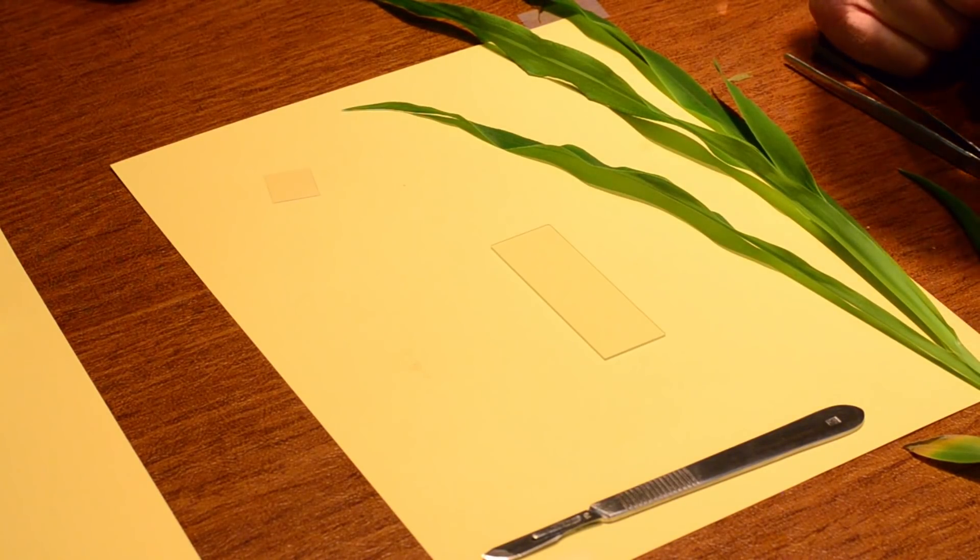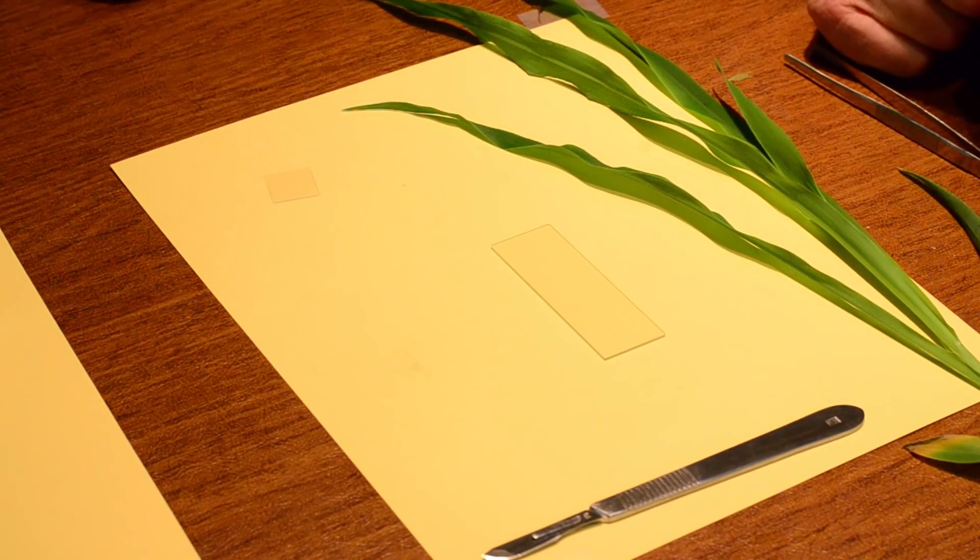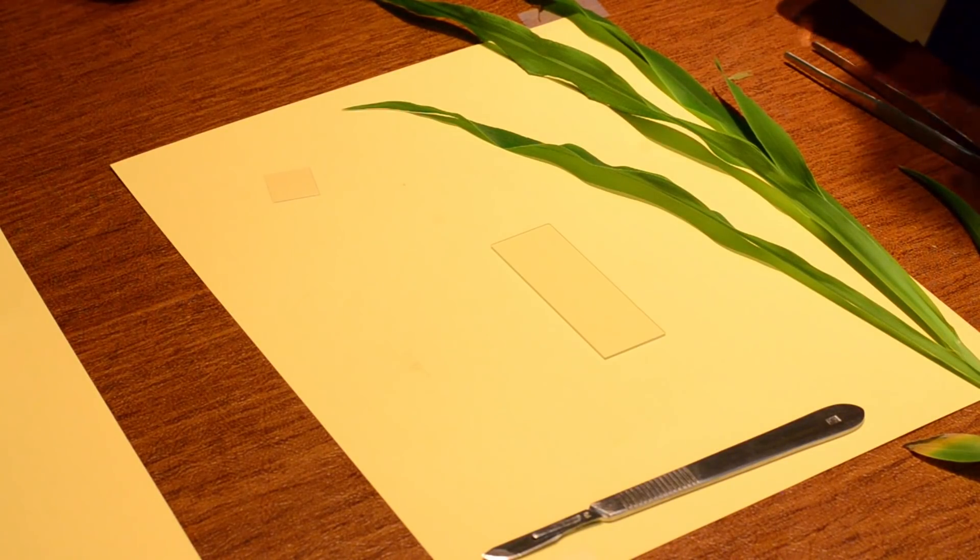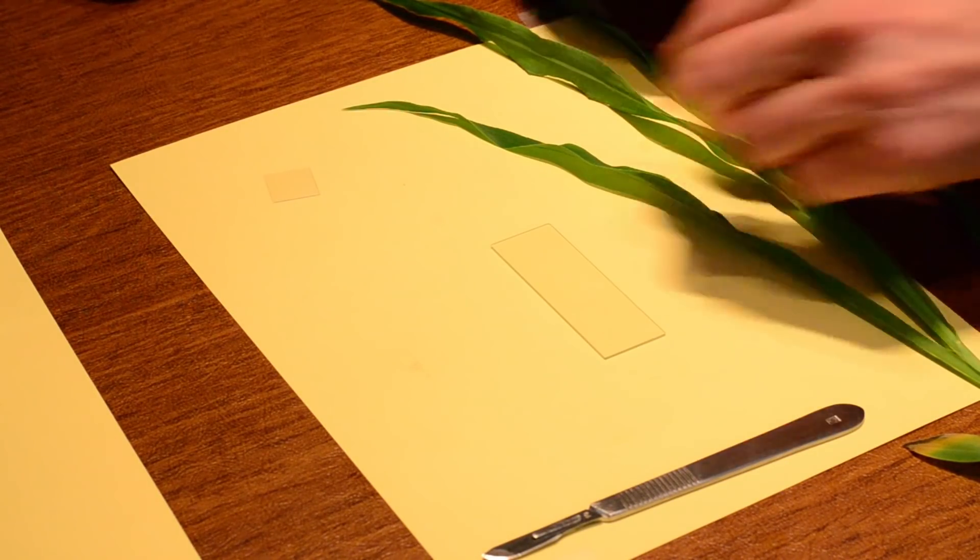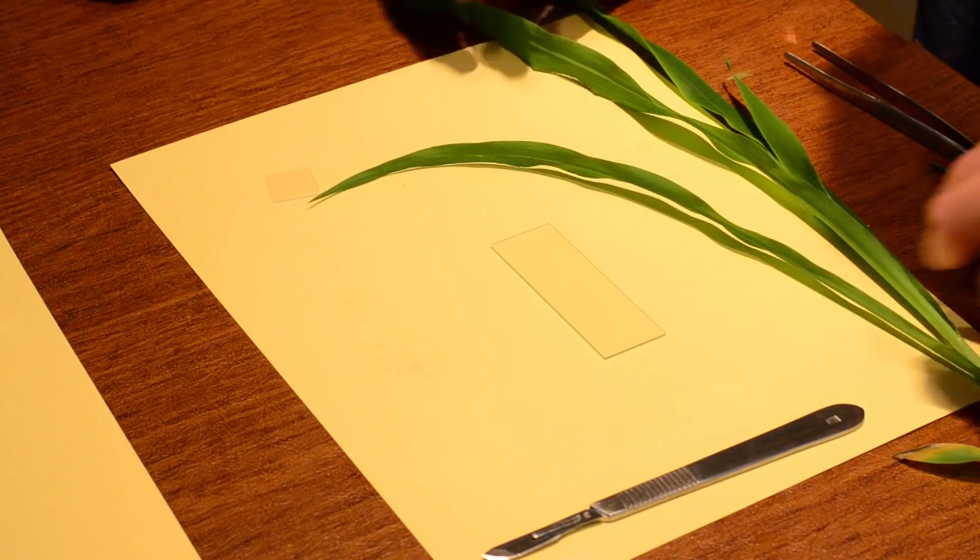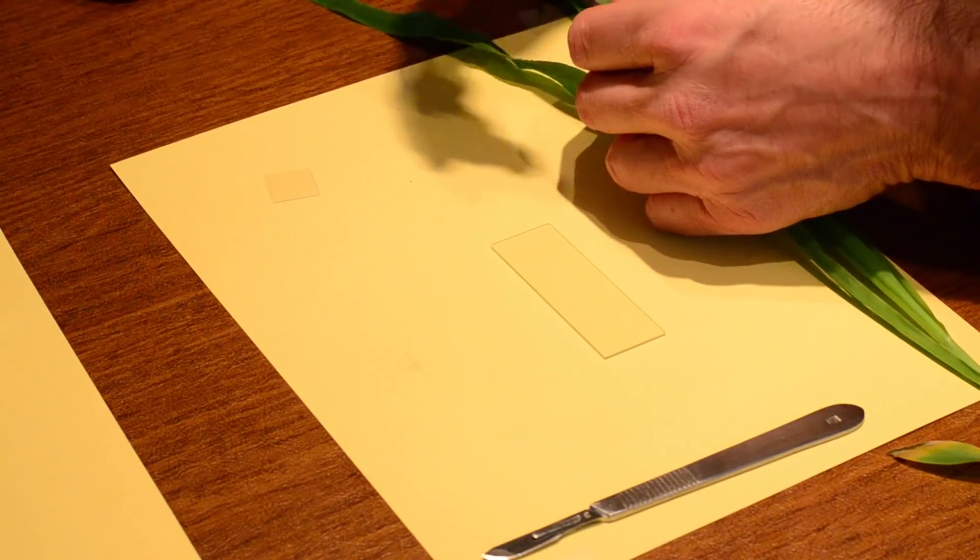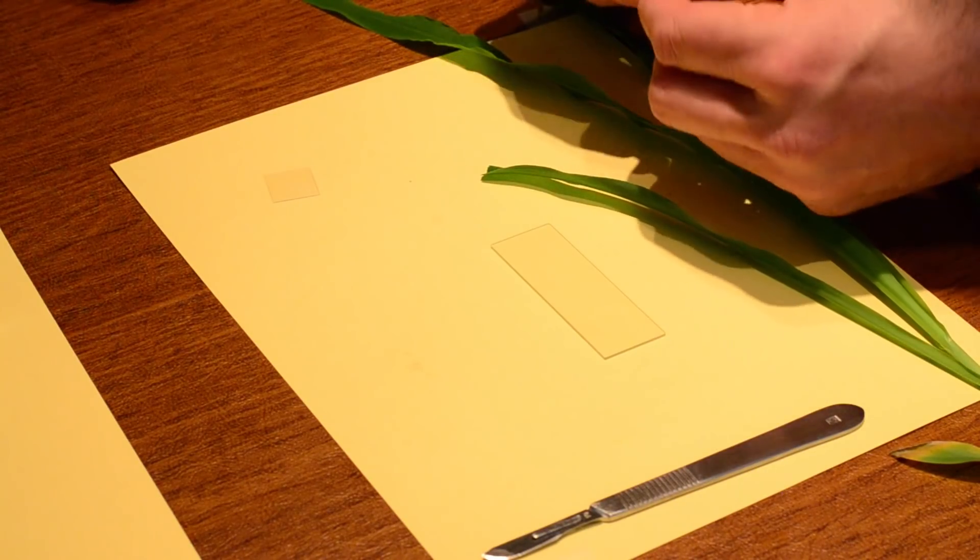Okay, the last one we're going to do is looking at the stomata. And these are the little tiny openings. They look like lips actually on the underside of the leaf. So we want to get the grass, the monocot, the corn. And we just want a little piece of the leaf. So I can just rip that with my fingers.